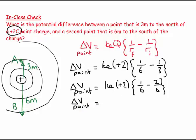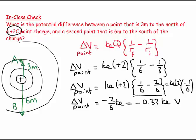...which equals kₑ times 2 times (1/6 - 1/3), which is kₑ times 2 times -1/6. So this would be -2/6 kₑ, which equals -0.33 kₑ volts.